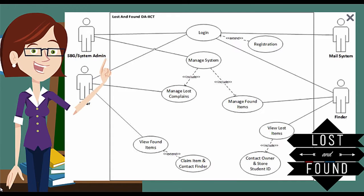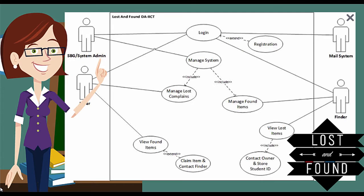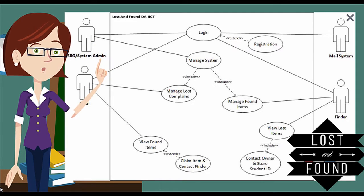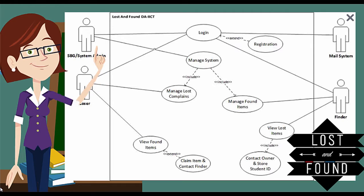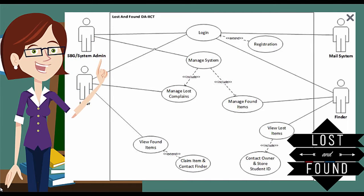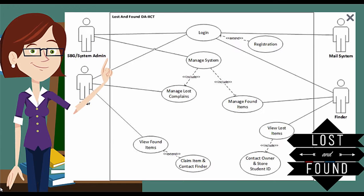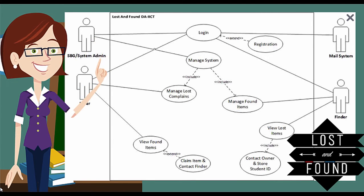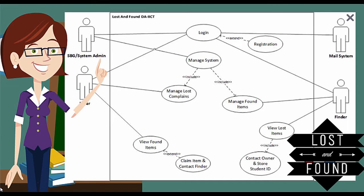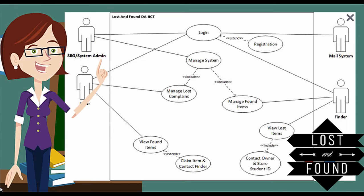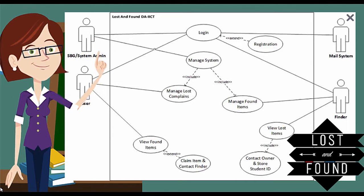A use case diagram depends on three major things. First is the actor — the actor can be a human user, some internal application, or an external application. Second is functionalities, represented as use cases shown as oval shapes. Third is relationships among use cases and actors — there are three kinds: the include relationship, the extend relationship, and the generalized relationship. Let's look at the lost and found system's use case diagram.